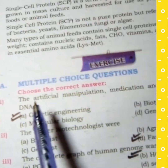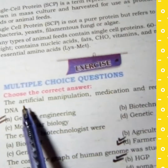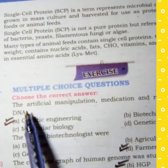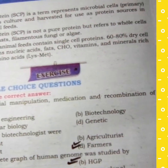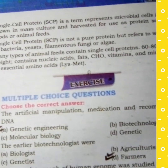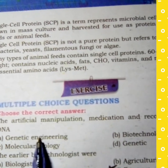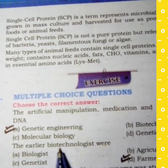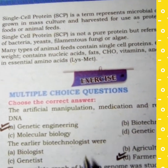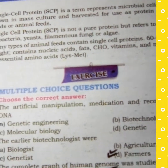MCQ number 1: The artificial manipulation, modifications, and recombination of DNA — option A, Genetic Engineering, is the correct answer. MCQ number 2: The earlier biotechnologists were — option D, Farmers, is the correct answer.